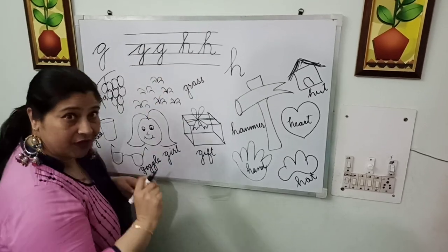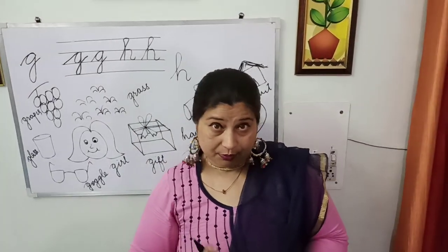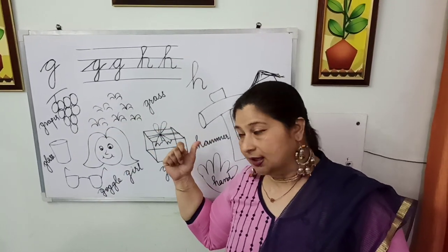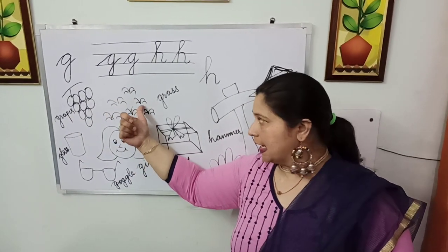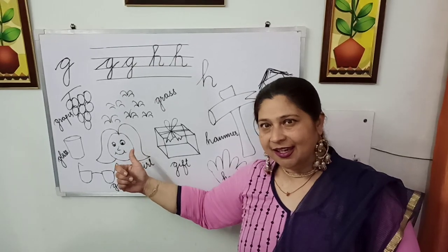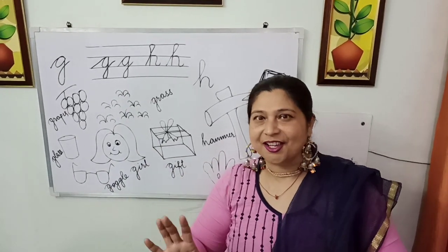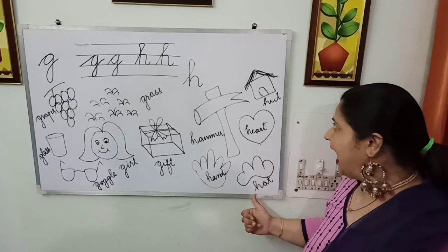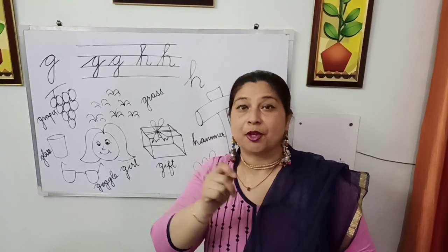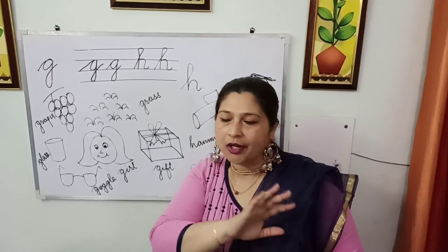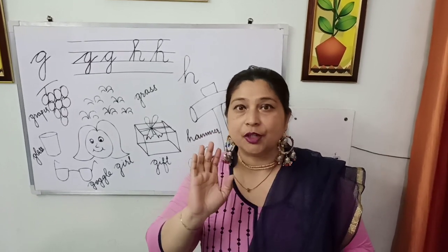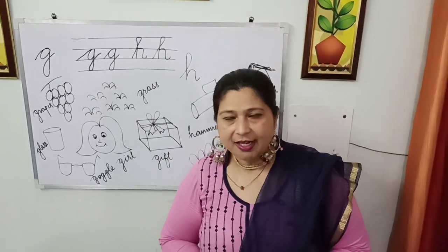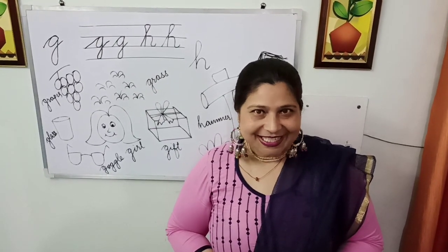Children, I hope you will revise these 2 sounds today at home and draw pictures starting with 'g' and 'h'. You can easily draw grapes, grass, glass, goggle, girl, and gift. On another page you can draw heart, hand, hat, and hammer — hammer will be a little difficult, so ask your parent to draw it first and then you can color all the pictures. On another page you have to write these 2 sounds all together. This is your practice work. See you next day — till then, take care and bye bye.